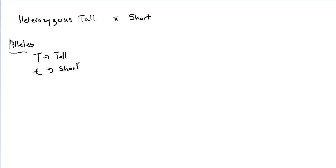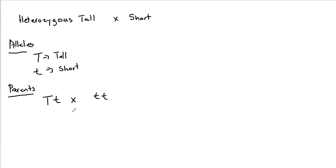Once we've got our alleles figured out, we need to understand who our parents are. Our parents are going to be a heterozygous tall — capital T, lowercase t — crossed with a short. We know what a short is: it's recessive, so it's going to be lowercase t, lowercase t. So we know our parents and our alleles, and we can now do our Punnett square.